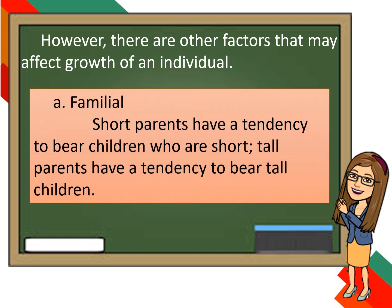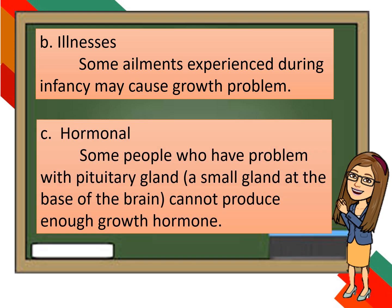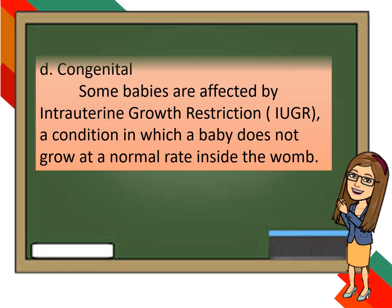A. Familial: Short parents have a tendency to bear children who are short, and tall parents have a tendency to bear tall children. B. Illnesses: Some ailments experienced during infancy may cause growth problems. C. Hormonal: Some people who have problems with the pituitary gland cannot produce enough growth hormone. D. Congenital: Some babies are affected by intrauterine growth restriction, a condition in which a baby does not grow at a normal rate inside the womb.